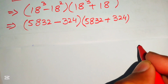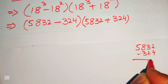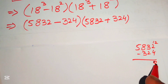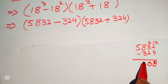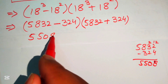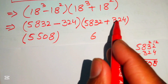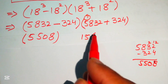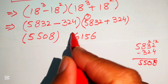First we subtract: 5832 minus 324. Borrowing gives 12 minus 8 is 4... wait — 2 minus 4, borrow: 12 minus 4 is 8; 2 minus 2 is 0; 8 minus 3 is 5 — so 5832 minus 324 equals 5508. Then we add: 5832 plus 324 — 4 plus 2 is 6, 3 plus 2 is 5, 8 plus 3 is 11 write 1 carry 1, 5 plus 1 is 6 — so 5832 plus 324 equals 6156.